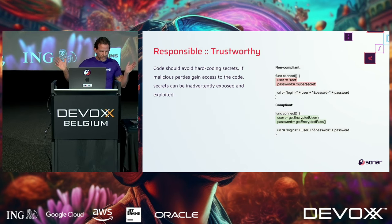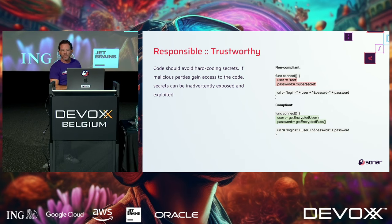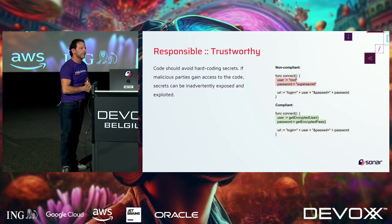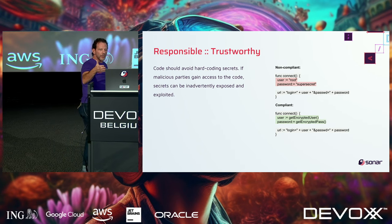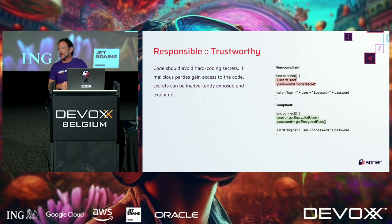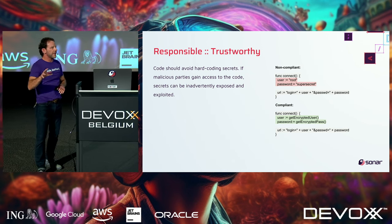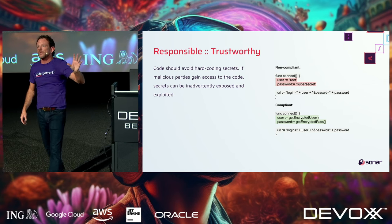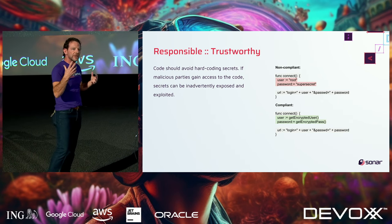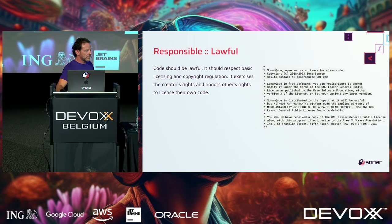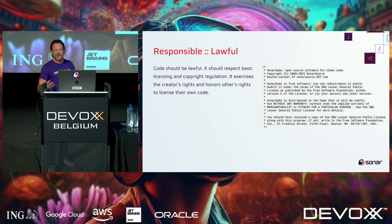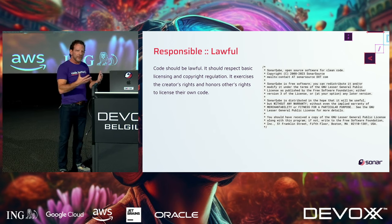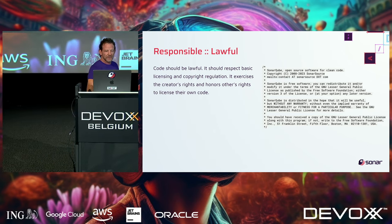Also, code should be trustworthy: don't put hard-coded passwords and usernames in your code. Abstract that out — the compliant code uses methods to retrieve credentials. This is highly cohesive, loosely coupled: a method does one thing, gets the encrypted user. The snippet has no idea where you're getting that user or password; it just calls the function and gets its data. You should also be lawful — respect licensing. Be a good community player. If you're using open-source software, follow their licenses and contribute back.